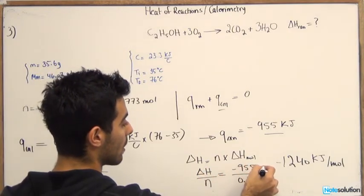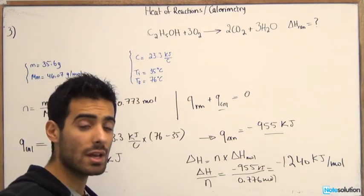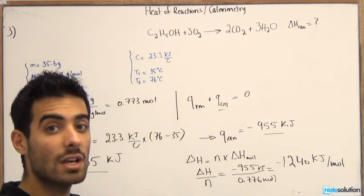And there you go. Kilojoules and then moles over here. That would give you negative 1,240 kilojoules per mole.